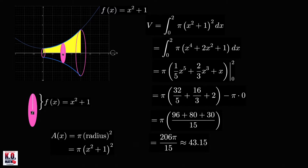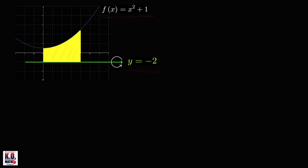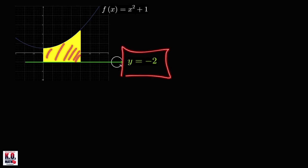Let's move to the second problem. Consider the region bounded above by the same function and bounded below by y equals negative 2, over the interval 0 to 2. We want the volume of the solid generated when this region is revolved about the line y equals negative 2.